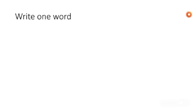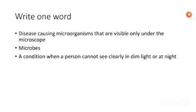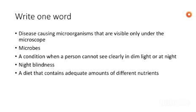Now write one word for each statement. Disease-causing microorganisms visible only under a microscope are called microbes. A condition when a person cannot see clearly in dim light or at night is called night blindness, caused by deficiency of vitamin A. A diet that contains adequate amounts of different nutrients is called a balanced diet.